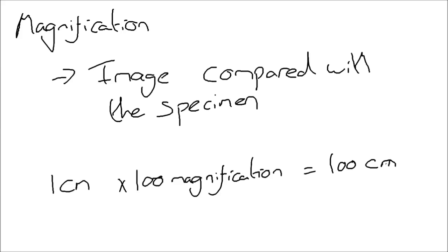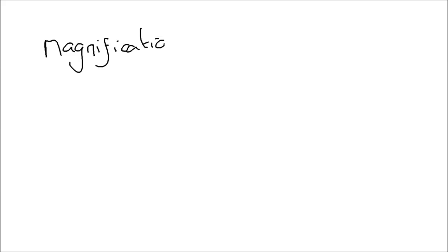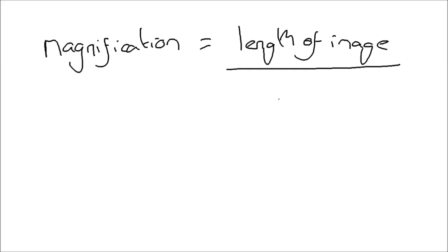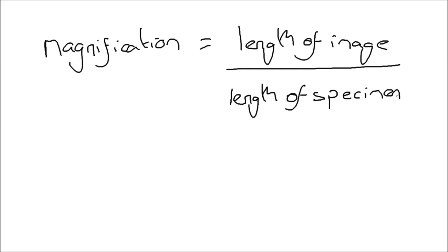If something is one centimetre and you've got a hundred times magnification, your image would be a hundred centimetres because that would be magnified up — you've made it a hundred times bigger than it actually is. In terms of calculating magnification, it's quite an easy calculation. The equation is: magnification is equal to the length of the image over the length of the specimen — that's the actual size of the object or organism.